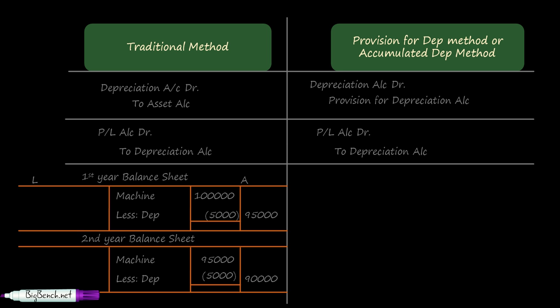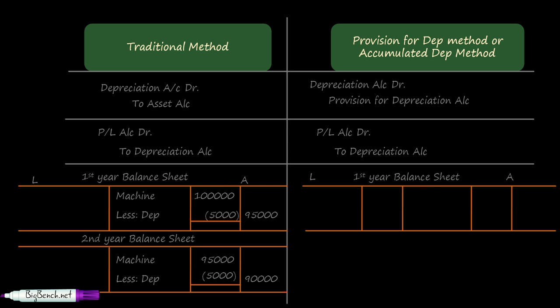It will be interesting to see how things appear in the balance sheet. In the first year, because we did not touch the asset account, machine remains at its original cost of ₹1,00,000. The provision for depreciation account has a credit balance and appears on the liability side — say ₹5,000. For the sake of presentation, you can show provision for depreciation as a deduction from machine on the asset side, but in the ledger the machine remains at ₹1,00,000. The outer column figure of ₹95,000 is not a realistic figure for the machine's value.